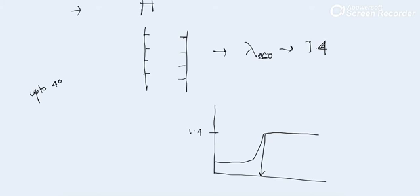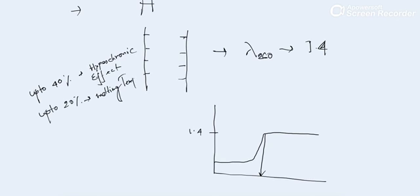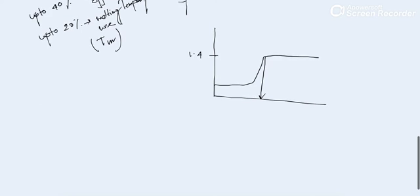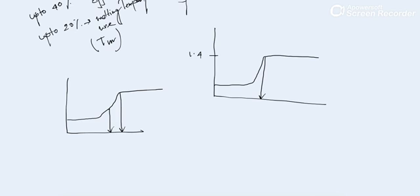I have said that up to 40 percent increase equals the hyperchromic effect. But when it increases up to 20 percent, there is a term you should all know — that is melting temperature, or Tm. So this is 1.4 at 40 percent increase and 1.2 at 20 percent, starting from 1. The point at 1.2 represents the Tm, and this range represents the hyperchromic effect.